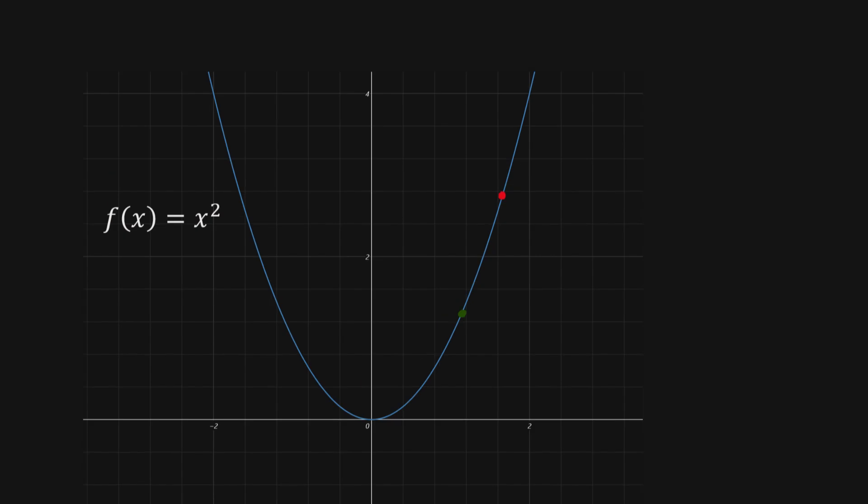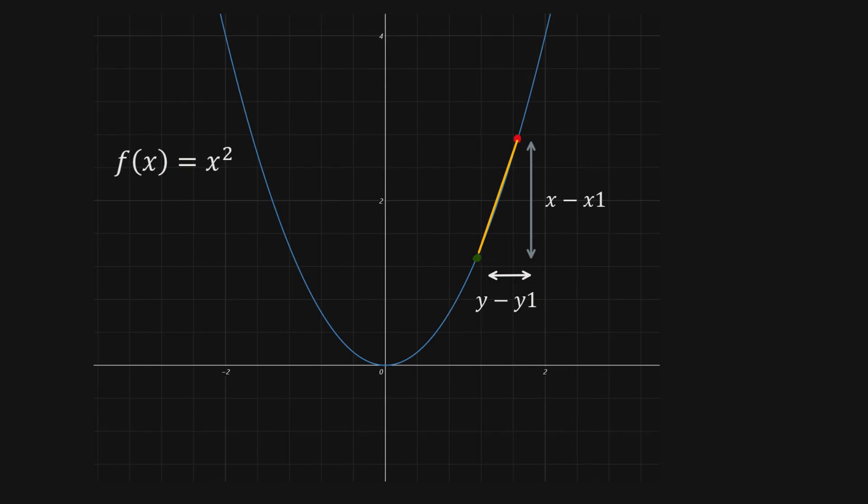And now let's pick two points on this graph, p and q. And what we're going to do is we are going to find the average slope between those two points. So the average slope between the two points must equal the slope of the line connecting the two points.